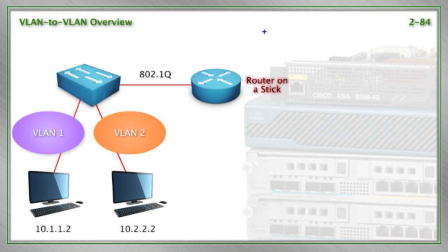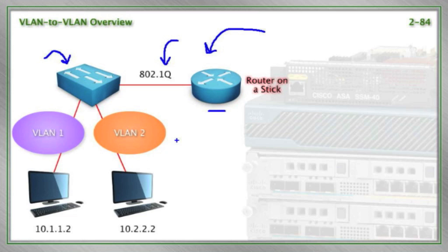Because I'm a big fan of Las Vegas, I call it the one-arm bandit configuration. What we're going to do is take a router and connect it with an 802.1Q trunk to a layer-two switch, and we're going to route between VLANs.